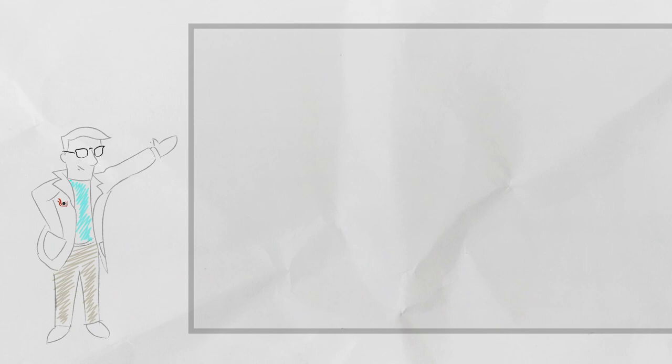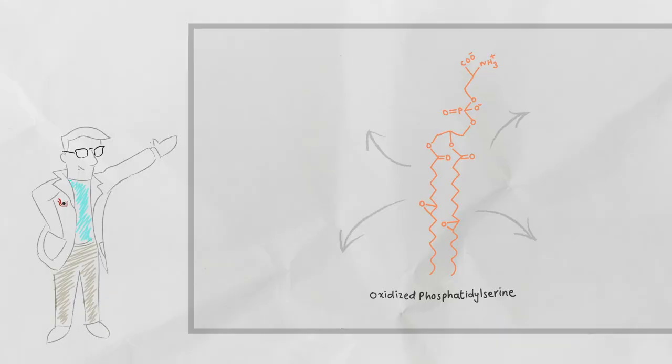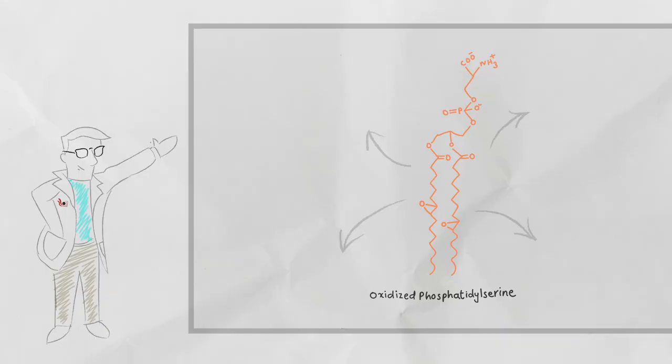So moving forward our goal is now to find oxidized phosphatidylserine in tissues beyond the brain and immune system because these lipids are known to exist in different metabolic tissues like liver, kidney, lungs, muscles and the identity of enzymes or systems metabolizing these in different tissues is currently unknown.